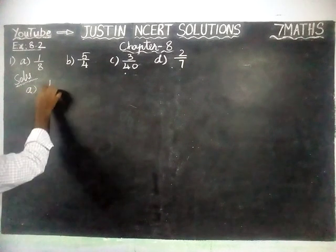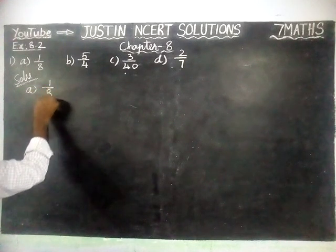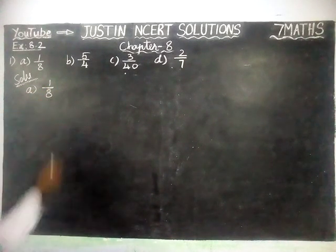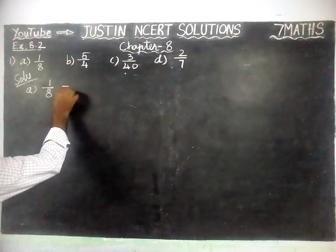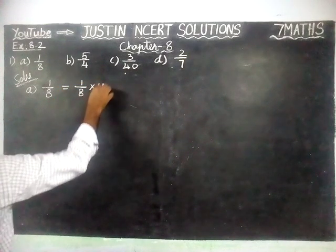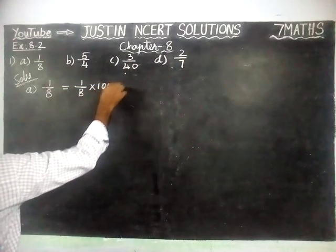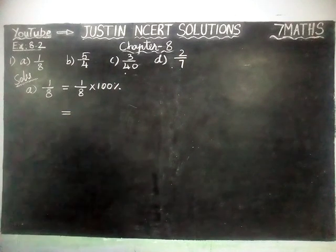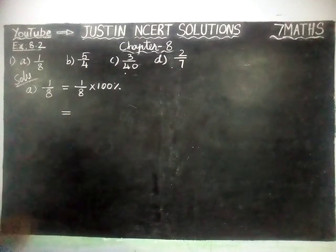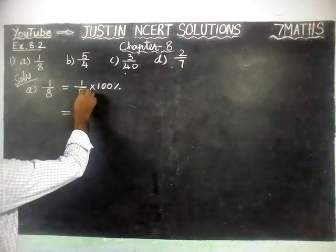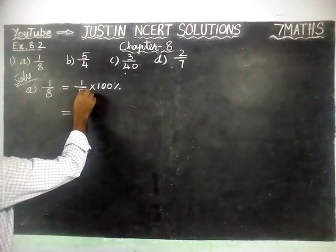Part A: 1 by 8. We are going to convert this into percentage. It is equal to 1 by 8 into 100 percent. Now we are going to divide it by a common divisor. Here, first we can divide it by 4.